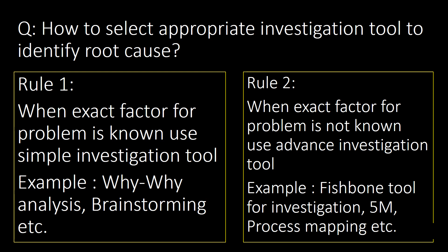How to select the appropriate investigation tool to identify root cause? Based on the problem statement and overall expertise of the investigator, tool selection may vary. Two rules simplify this: Rule 1 — when the exact factor for the problem is known, use a simple investigation tool such as why-why analysis or brainstorming. For example, if we know the problem is with humans, material, or process, we can use a simple tool. Rule 2 — when the exact factor is not known, use an advanced investigation tool such as the fishbone tool, 5M or 6M tool, or process mapping, to challenge multiple factors like material, process, machines, or humans.